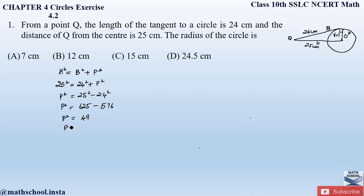Taking the square root on both sides, we get the square root of 49 equals 7. Therefore the perpendicular, which is the radius, equals 7 centimeters. It's better to know the squares of numbers up to 25.